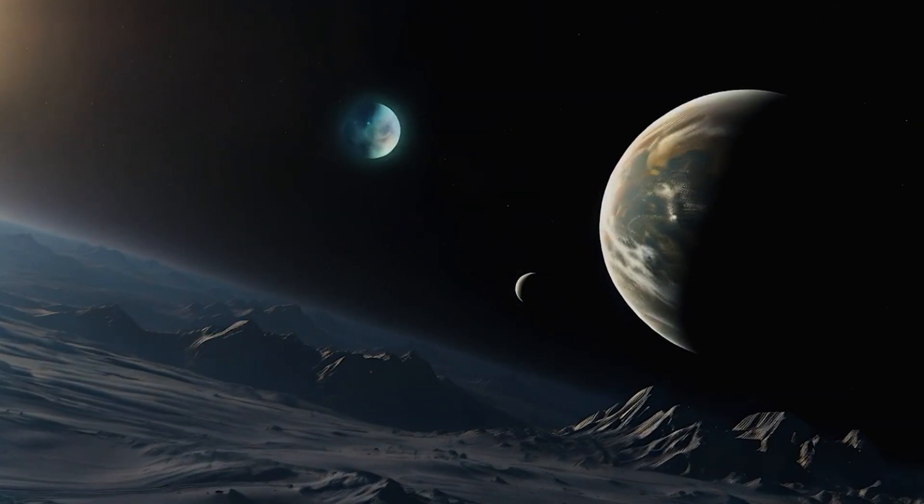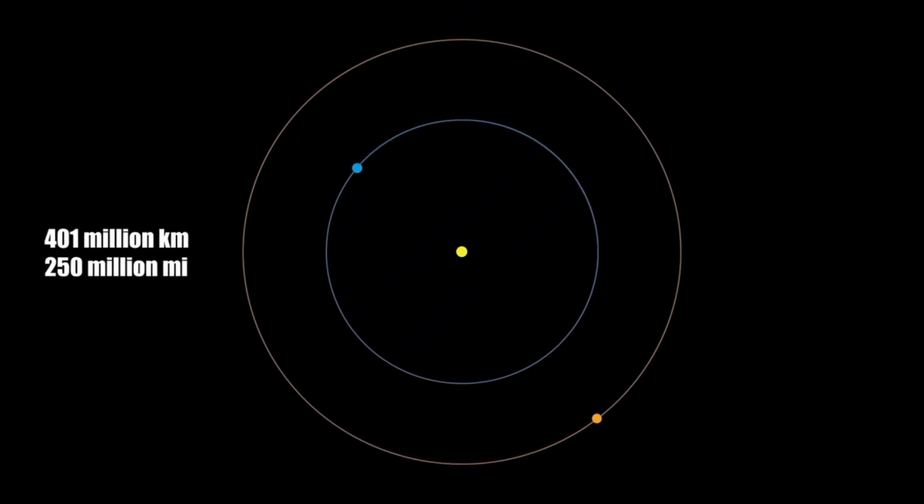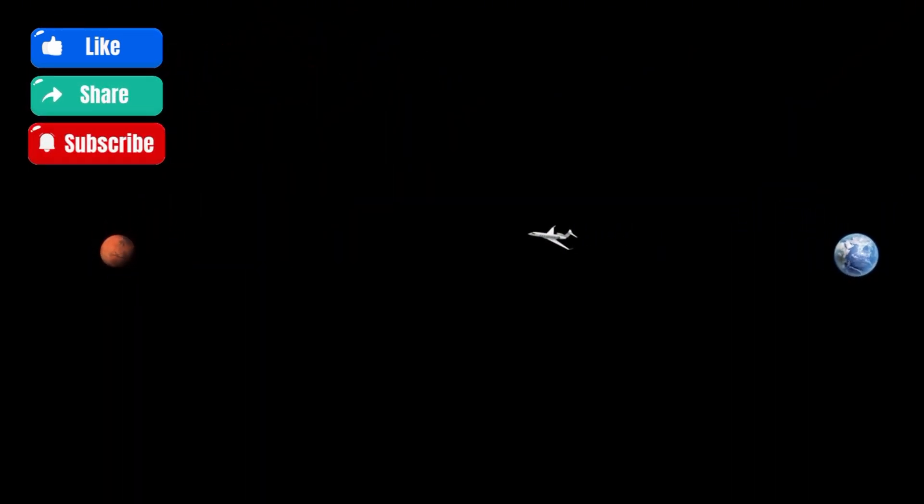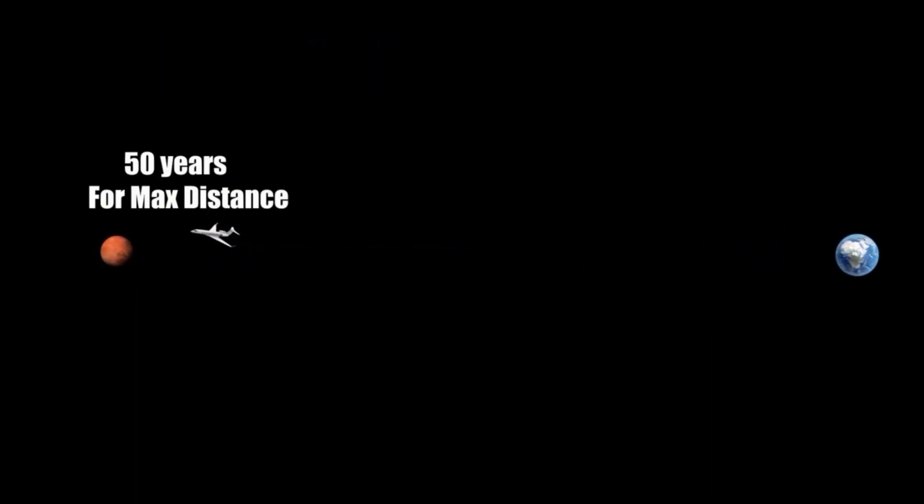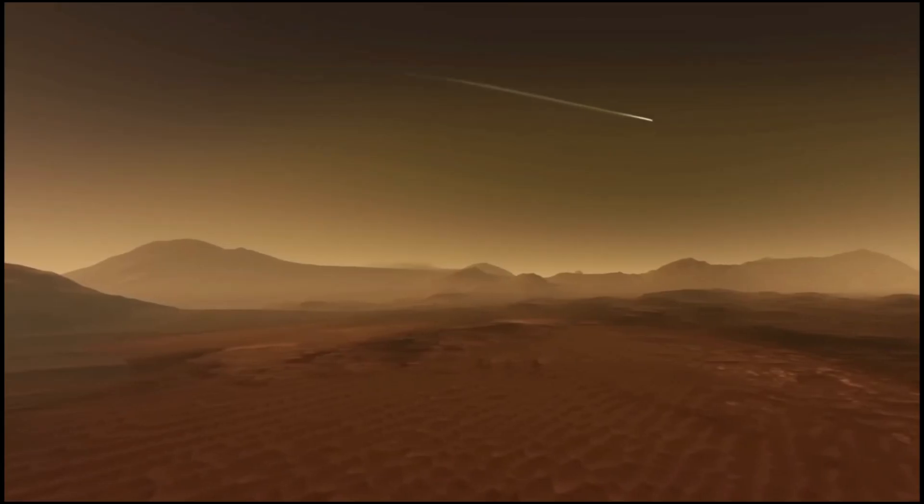Mars, closest to Earth at 54.6 million kilometers distance between both of them. The distance can stretch up to 401 million kilometers when both are on opposite sides of the Sun. To put in perspective, travel to Mars on a commercial jet would take up to 50 years. For space explorers, the rovers and probes we send to the red planet embark on this journey.